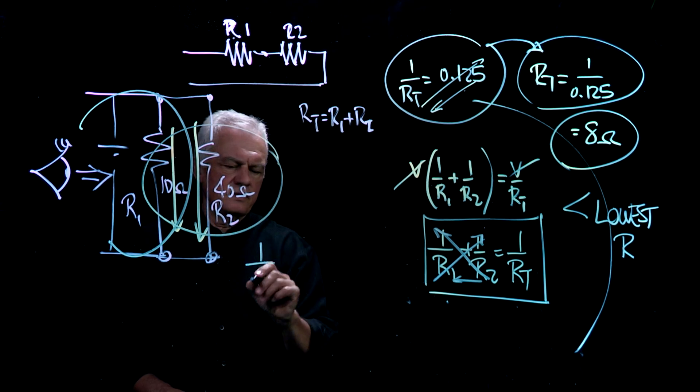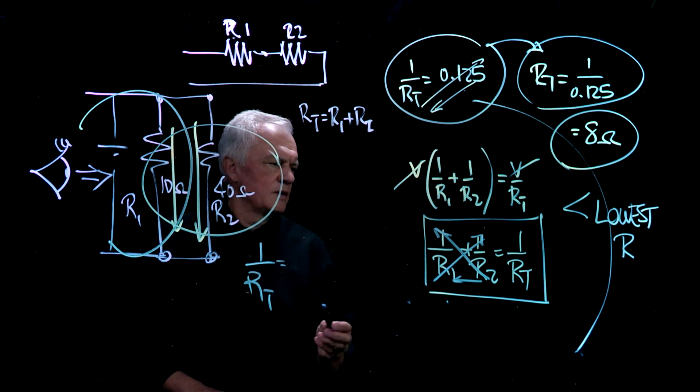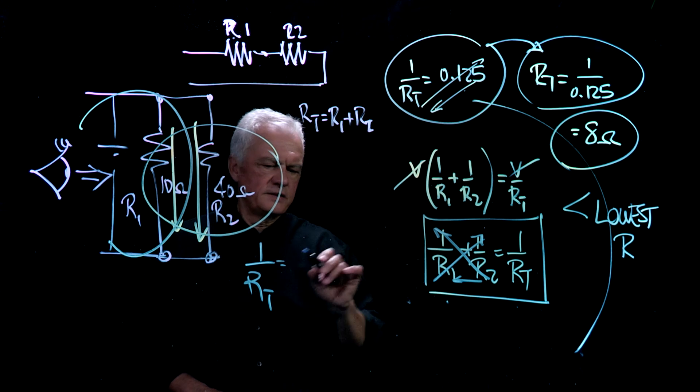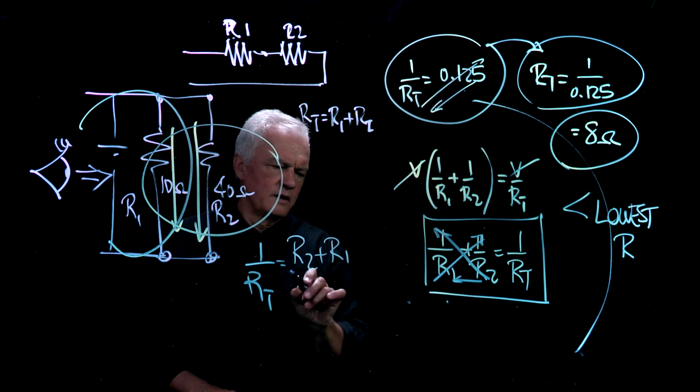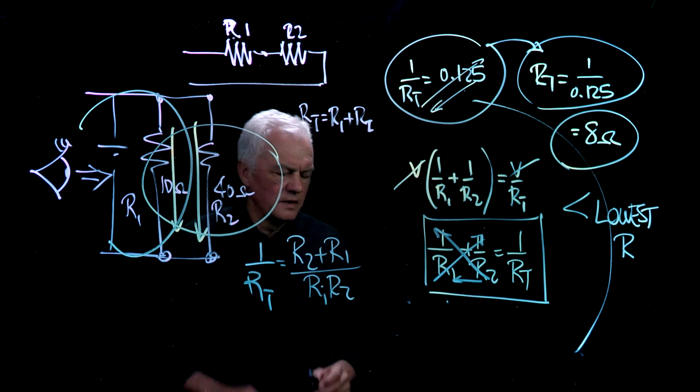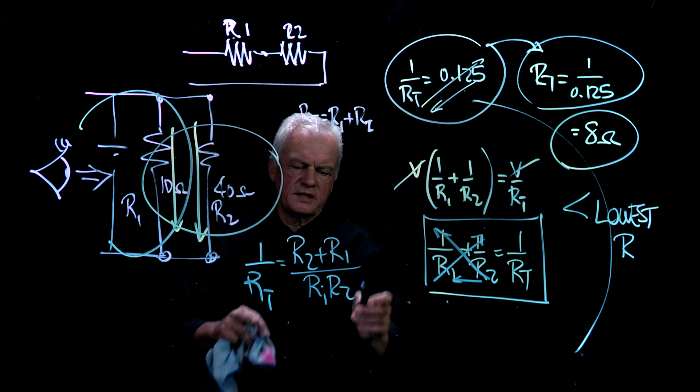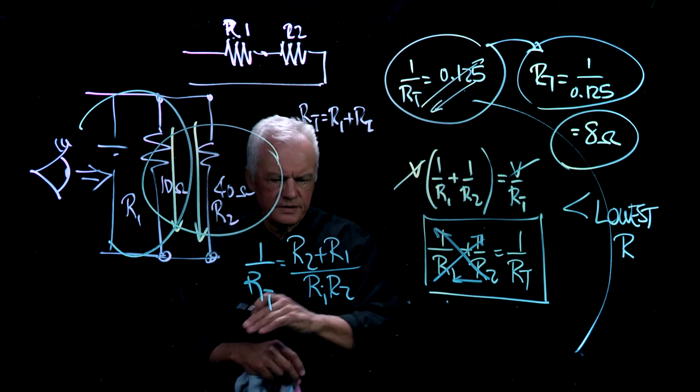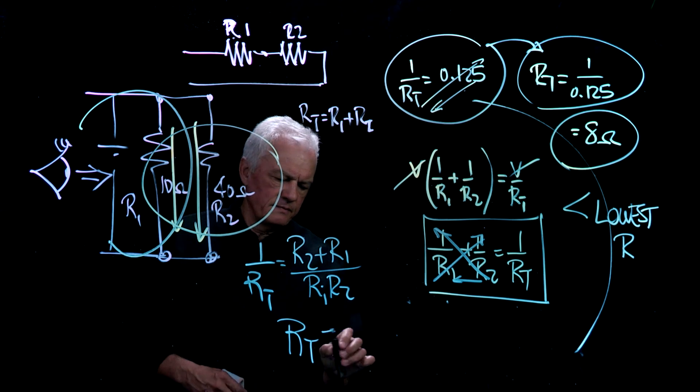I'm going to end up with 1 over RT equal to, in this case here, R2 plus R1 over R1 times R2. Again I've got to flip this, right? I can either multiply RT up here, bring R1, R2 over there, take R2 plus R1 down, but the result will look like this, or just flip it.